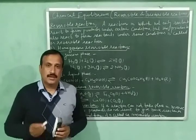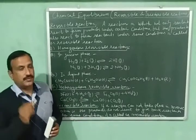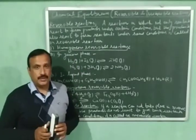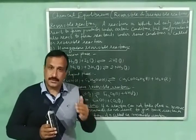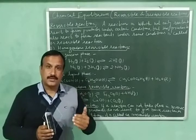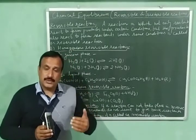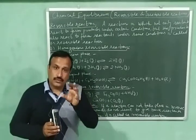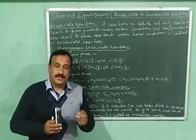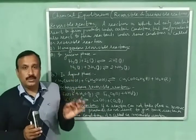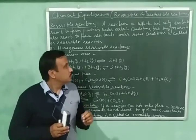But before coming on to this topic, let us quickly recapitulate reversible and irreversible reactions. A reversible reaction is one in which not only the reactants react to form products under certain conditions, but the products also react to form reactants under the same conditions. In other words, a reversible reaction takes place not only in the forward direction but also in the reverse direction. These reactions are represented by putting a double arrow between the reactants and the products, and they are further categorized into two categories.